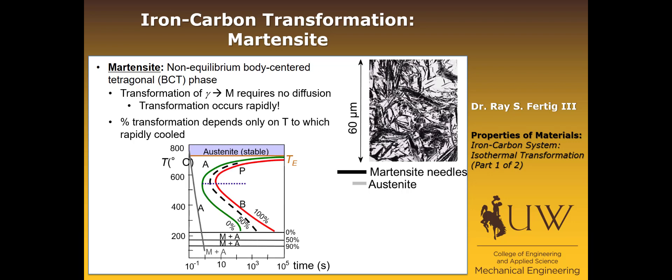On a time-temperature transformation curve, if we cool fast enough so that we don't form pearlite or bainite and cool all the way down, these horizontal lines correspond to martensitic transformations. Once we get past the martensite start temperature — which looks like it sits at around 225 degrees — martensite forms. If we hold at, say, 200 degrees, no new martensite would form and the ratio of martensite to austenite would remain the same. The only way to change it is to change temperature — time has no more effect once martensite has formed.